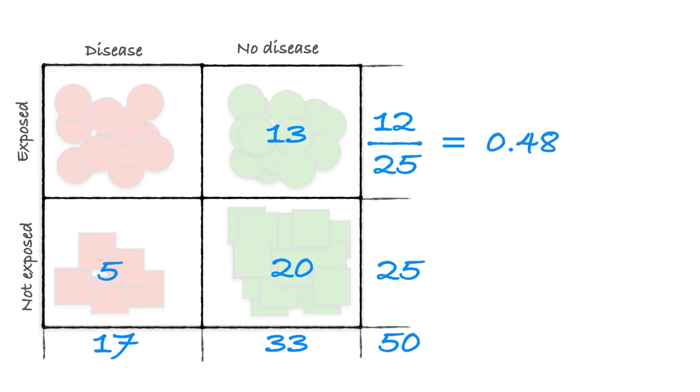Okay, watch what I do here. I simply say, of the 25 smokers, 12 of them got sick, so the risk among smokers is 0.48, 48%. And of the non-smokers, of the 25 non-smokers, five of them got sick, so the risk amongst non-smokers is 0.2, 20%.